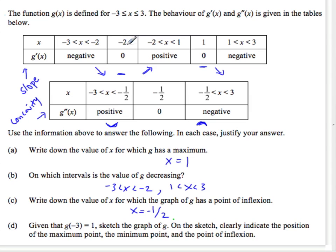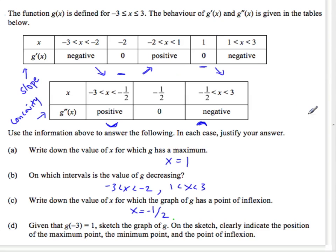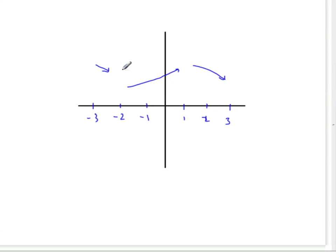From negative, at negative 2, the slope is 0. From negative 2 to 1, it's going up. Negative 2 to 1, it's going up like that. And then it's going down from 1 to 3. From 1 to 3, something like that.